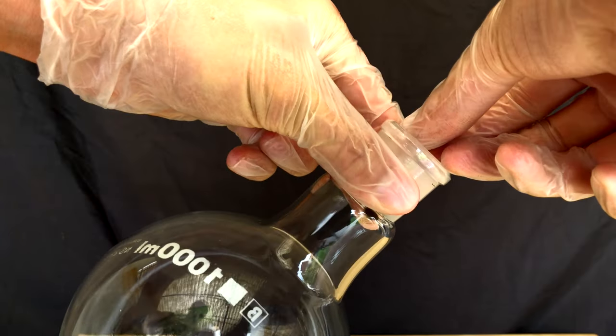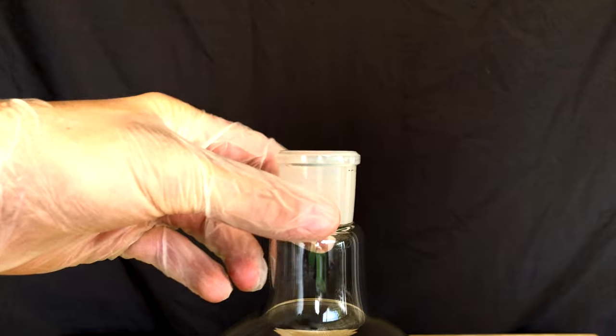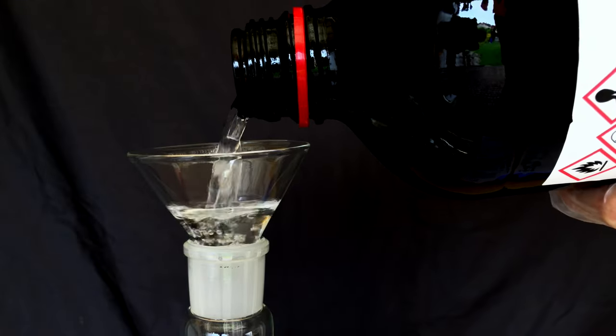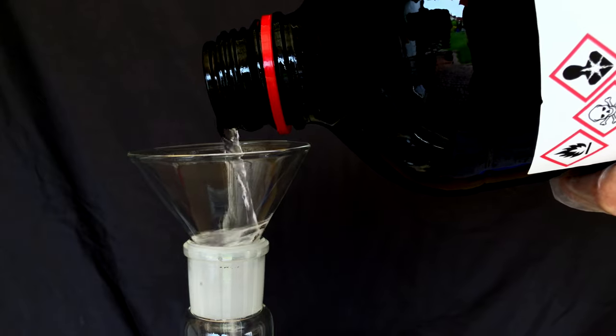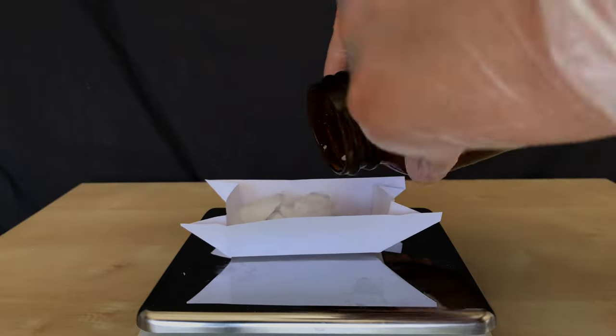To start off, a stir fish was dropped into a large round bottom flask. About 300ml of methanol were then measured out. It's important to work fast and to work in a very well ventilated area while dealing with methanol because it is toxic.